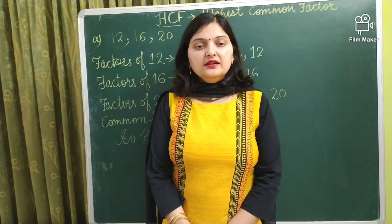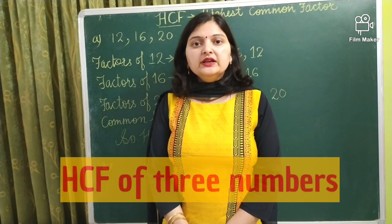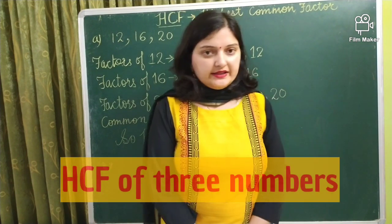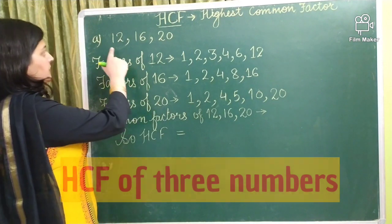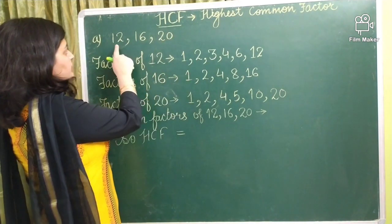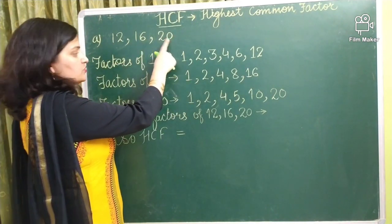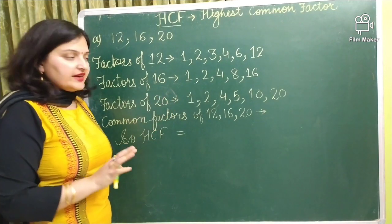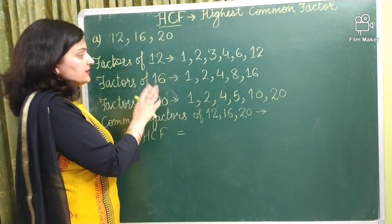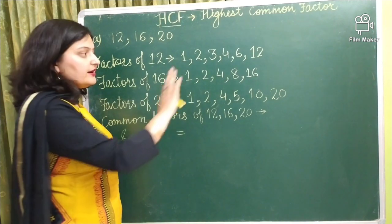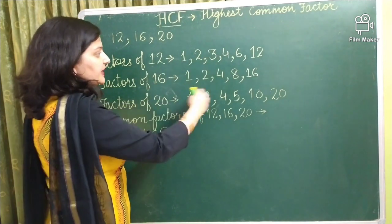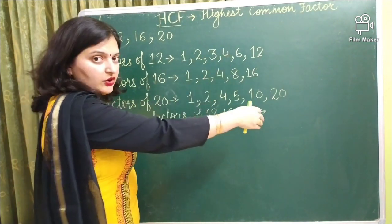Now we will find the HCF of 3 numbers. Let us take an example. We want to find the HCF of 12, 16 and 20. So what we will do? We will find the factors of 12, 16 and 20. The process of finding the factors will remain same. And you find the factors in your rough part.